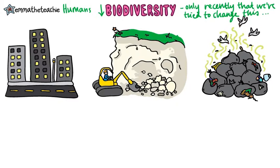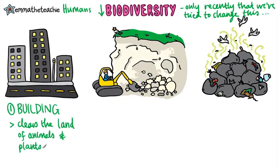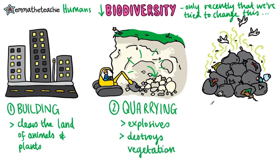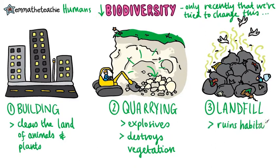Let's look at three main ways in which humans have reduced biodiversity. First of all, is building — we clear huge amounts of land of animals and plants to make way for our buildings. Secondly, is quarrying, which uses explosives to blow up parts of the earth to get the materials that we want from it. This is really destructive to vegetation and animals living there. And thirdly, is landfill. These horrible mounds of rubbish, unfortunately, ruin habitats and can even be toxic.